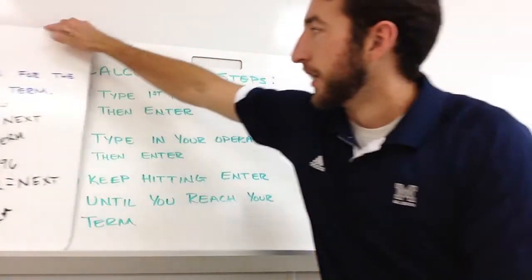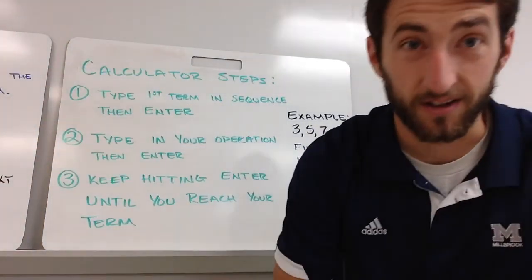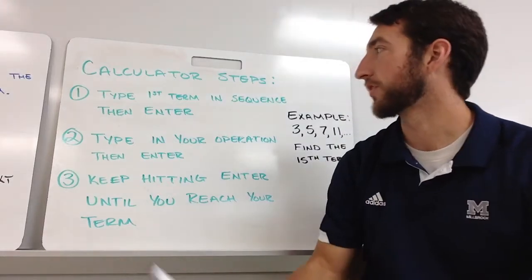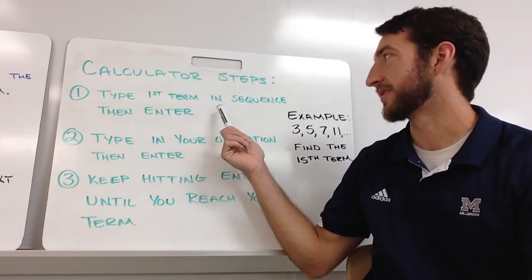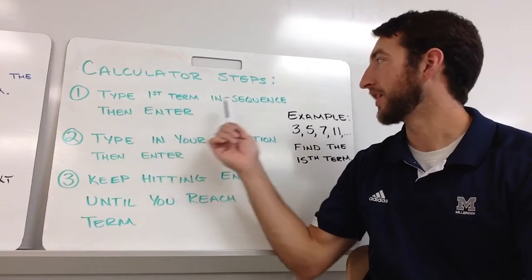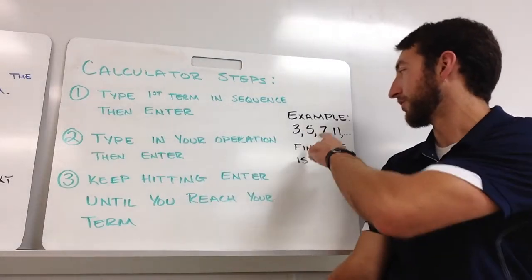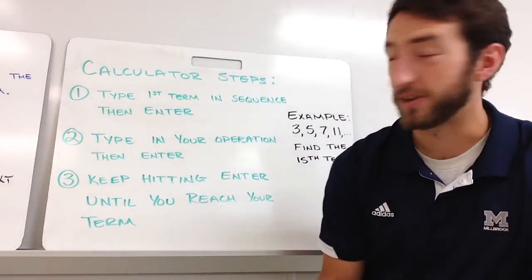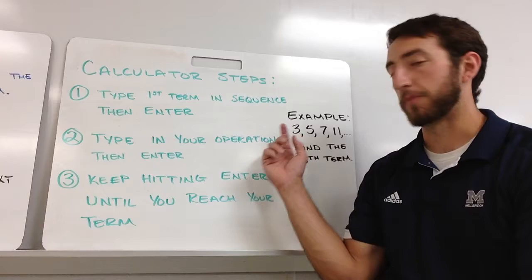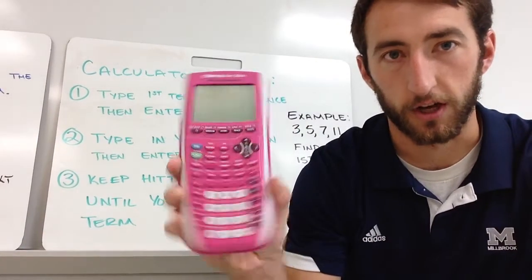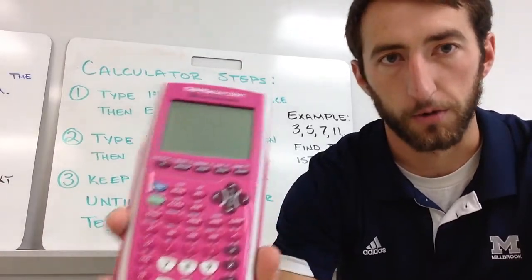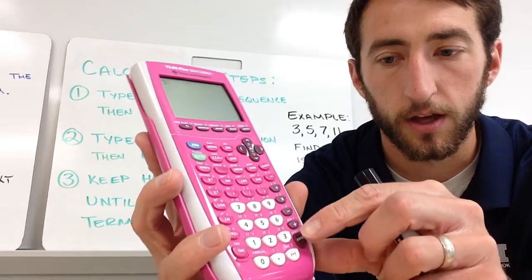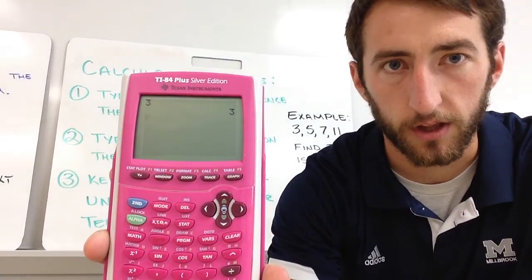Now for the calculator, because that took a long time to get the tenth term. In your calculator, what you want to do first is type the first term in the sequence. Let's use this as our example: 3, 5, 7, 11. Looks like we're adding 2 each time. First thing I'm going to do in my calculator, turn it on. I'm going to type in my 3. I get 3, then I'm going to hit enter. Then that moves it on.